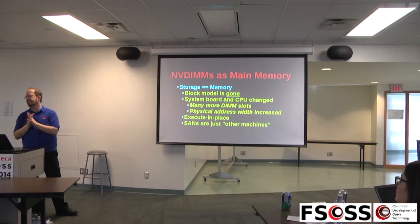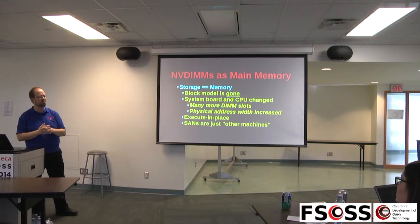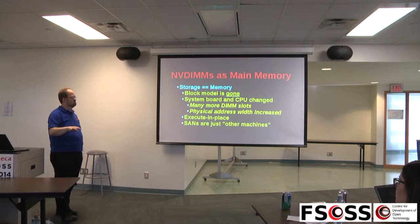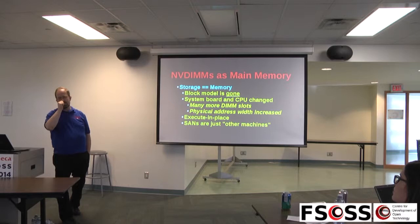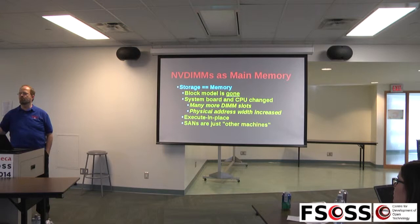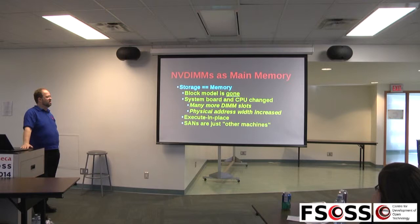Some changes on system boards and CPUs: it became much more common to have high counts of memory slots on motherboards. Instead of the four slots that existed previously, there are now 60 and 32-slot systems. Physical address space was increased — previous generations of chips had 41, 42, 48, or 49-bit address space physically, which is a limitation.